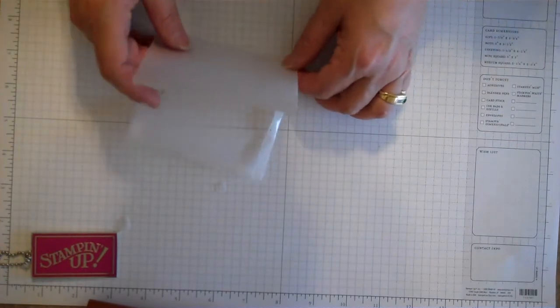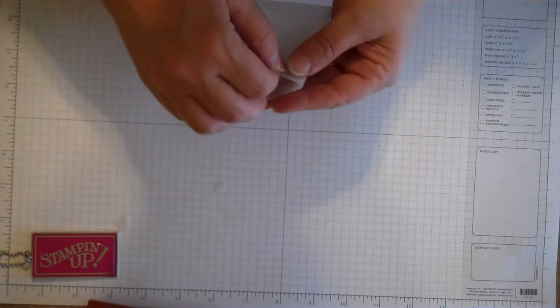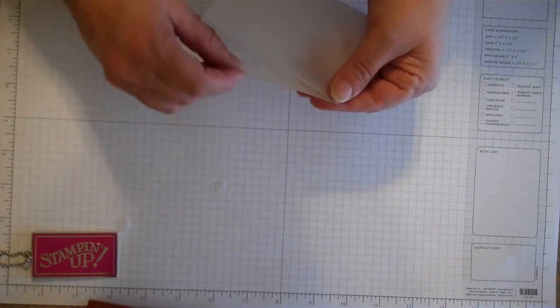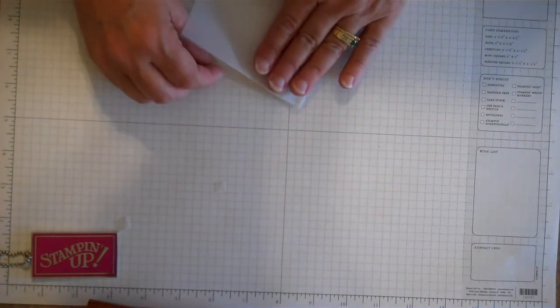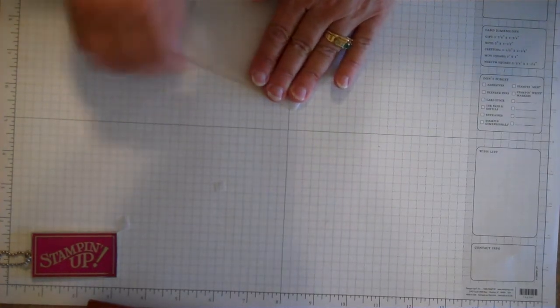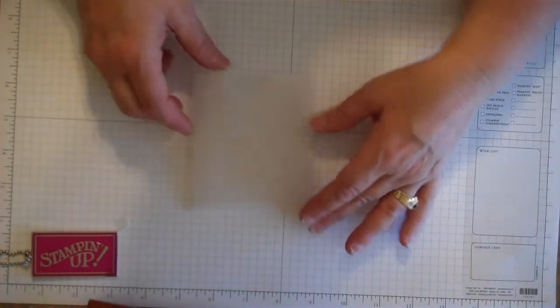So all you really have to do is just fold it together. It should line up pretty easily since you've got all these score lines folded real tight. And there you go, there's your little pocket.